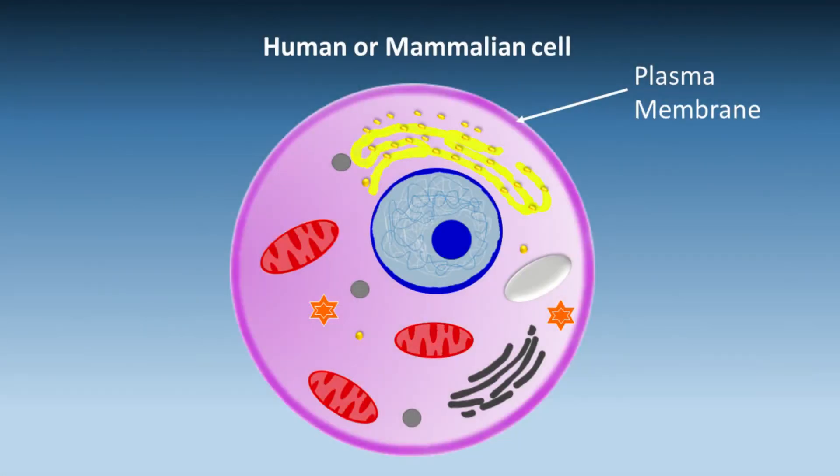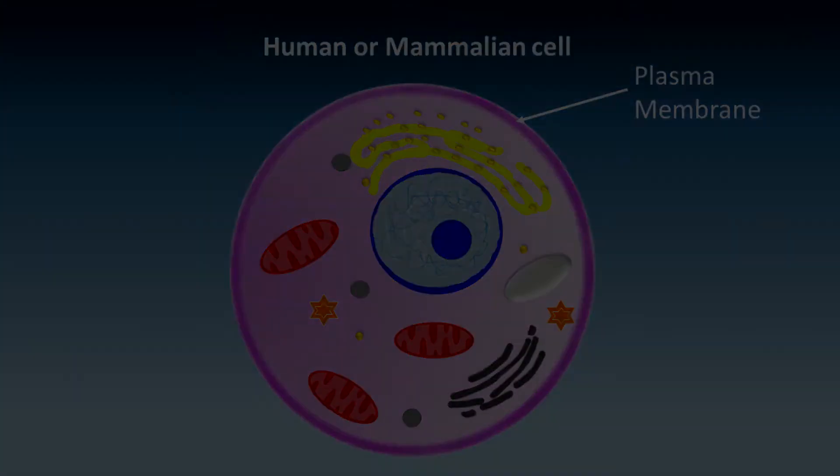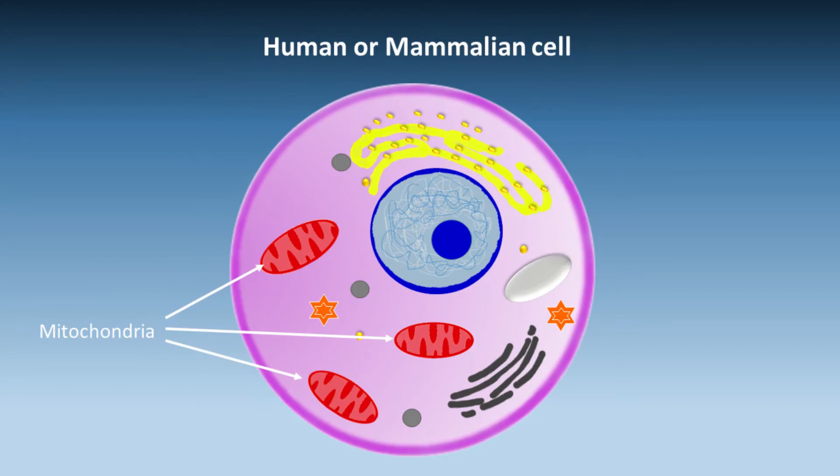The purple circle is the plasma membrane which contains a lot of organelles and structures. The important ones for us here are the blue nucleus and the red mitochondria. The mitochondria are the powerhouses of the cell. Without them, the cell's batteries are flat and all processes come to a halt.